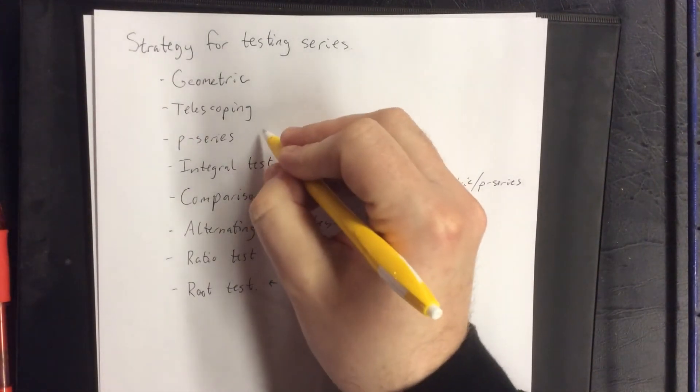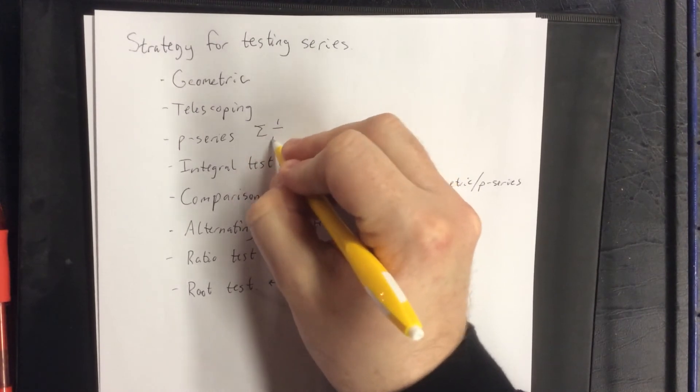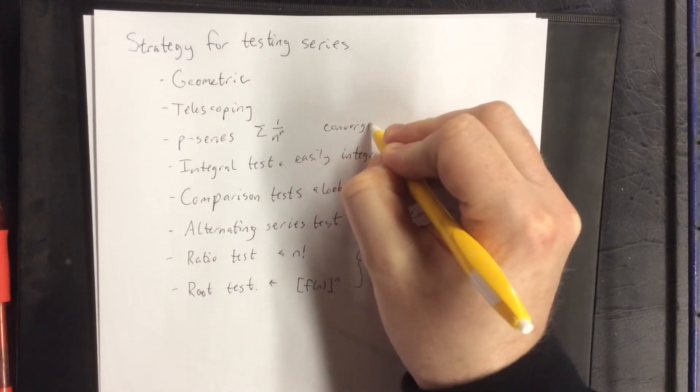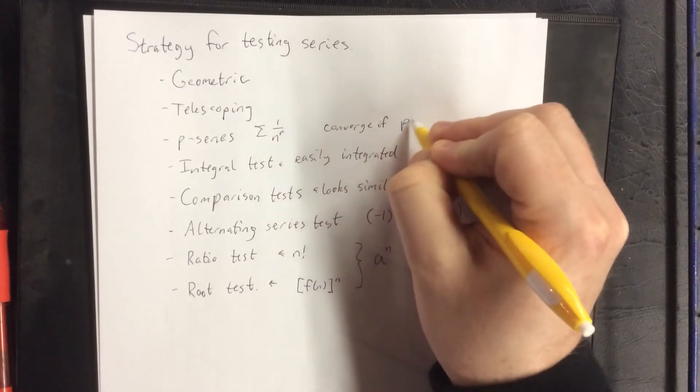P-series takes on a very specific form. It's the sum of one over n raised to the p power, and it will converge if p is greater than one.